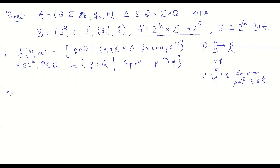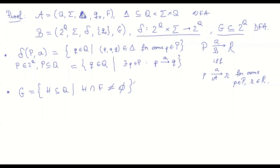The other part of my definition is the final states. As I anticipated in the intuitive explanation, the final states G are going to be all the subsets of Q that have at least one final state from F. This was the exact intuition we had in the intuitive explanation for this construction.